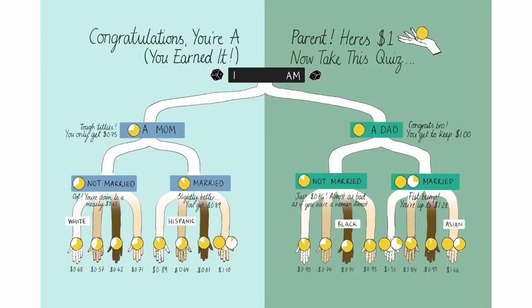You start at the top, you have a dollar, and then you see how that dollar changes depending on whether you're a man or a woman, whether you're married or unmarried, and depending on your race or ethnicity. It means that people can engage with the data for themselves. The thing that's quite powerful about this is it allows you to see multiple different possibilities — and that's the truth of the data. Averages in a diverse society don't mean very much. People want to understand how the data relates to their gender, their age group, and where they live in the country.